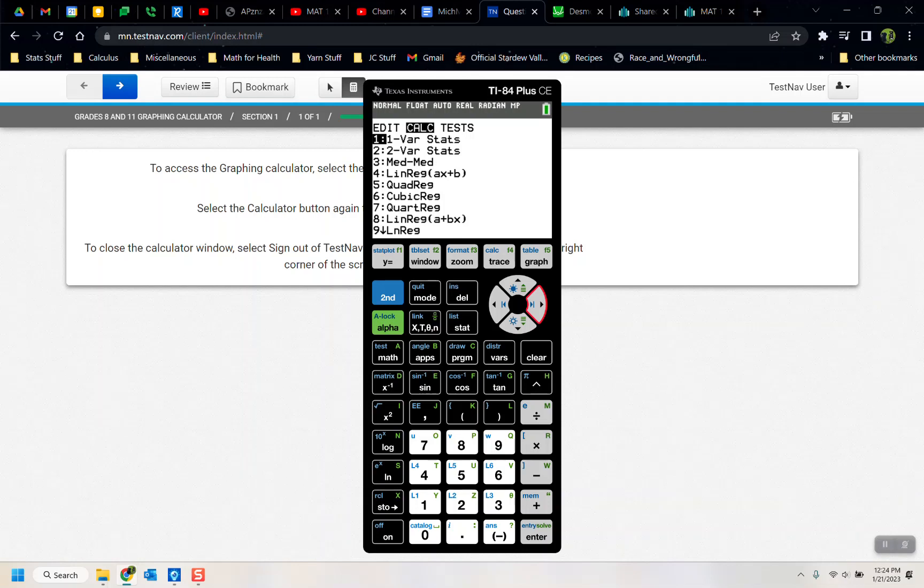So now we're going to go to stat, calculate, and we're going to choose number four. You can actually see number eight's an option as well. They both work, so it's kind of just whichever one you like. But most people choose number four because that's what their algebra teachers generally have them do. Your x list is whatever list you had your variables and your x variable in, so I had it in list one. List one is fine, and then list two is fine. And then I'm going to go down to calculate and press enter. And there you have it.